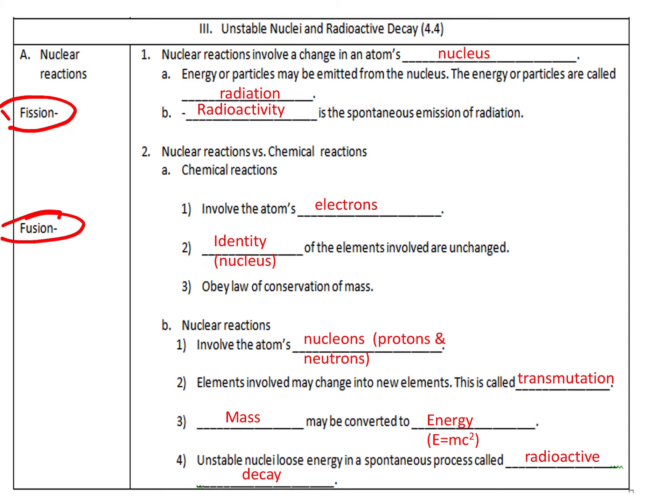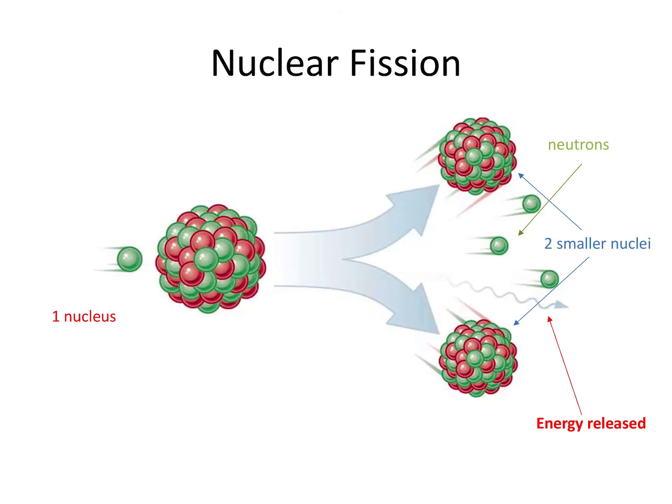Over on the left-hand side of your notes, you have the two terms fission and fusion. The next two slides are going to walk you through a description of those, as well as maybe some similarities and differences. So, take some notes as it narrates along. Firstly, we're going to talk about nuclear fission. Nuclear fission involves one nucleus that's going to be bombarded typically with a neutron and it's going to actually split into two smaller nuclei.